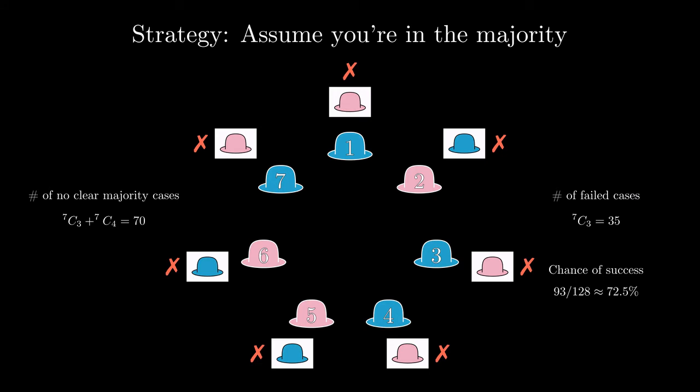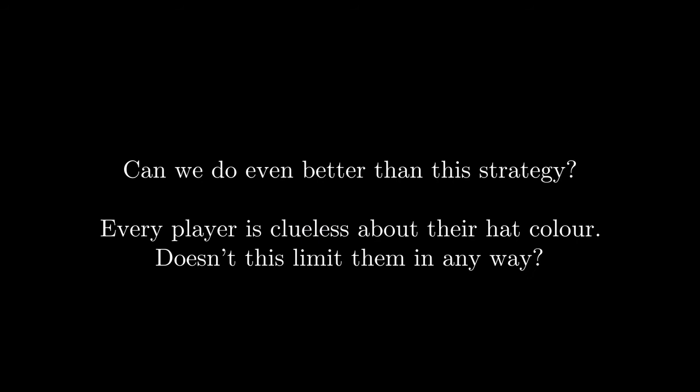If the same game happened with more than 7 players, the chance of not getting a clear majority is even lower. For instance, if there were 101 players, the chances of there being 50 pink hats, which is the only cases in which this strategy would fail, is less than 8%. So it seems like not knowing what hat you have on isn't that big of an issue. You can still have a majority of the guesses correct most of the time. But can we do better than the previous strategy? Is there any limit to how good a strategy can be?